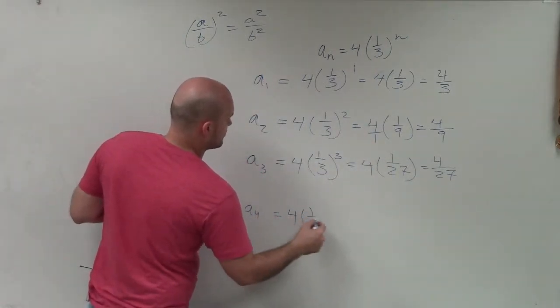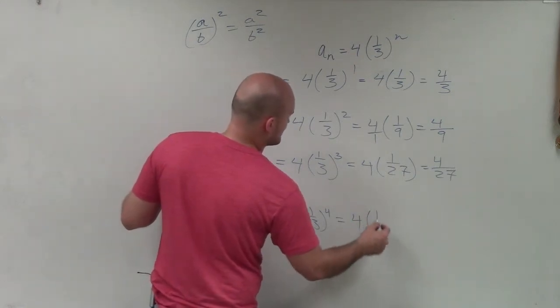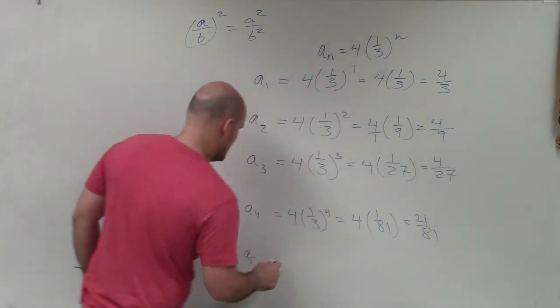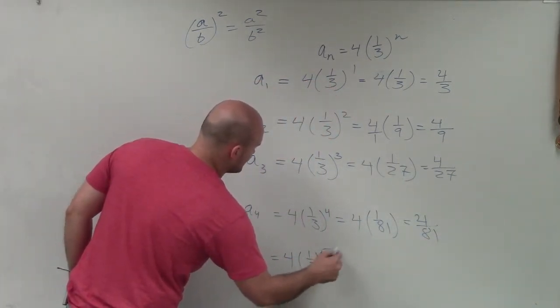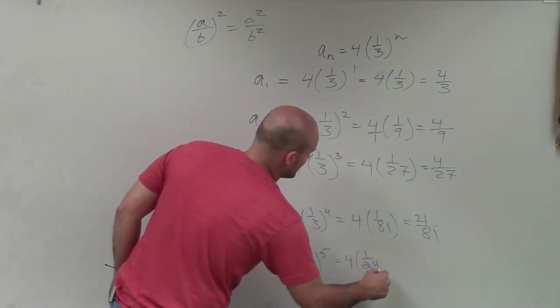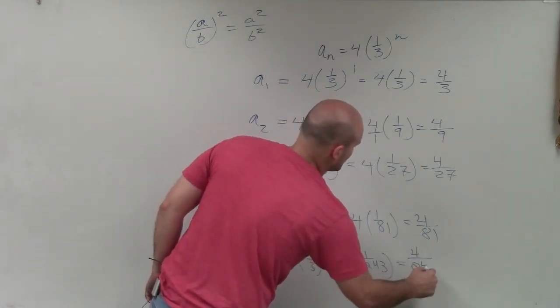For a sub 4, I have 4 times 1 over 3 to the fourth, which equals 4 times 1 over 81, which equals 4 over 81. And then the last one, a sub 5, is 4 times 1 third to the fifth, which equals 4 times 1 over 243, which equals 4 over 243.